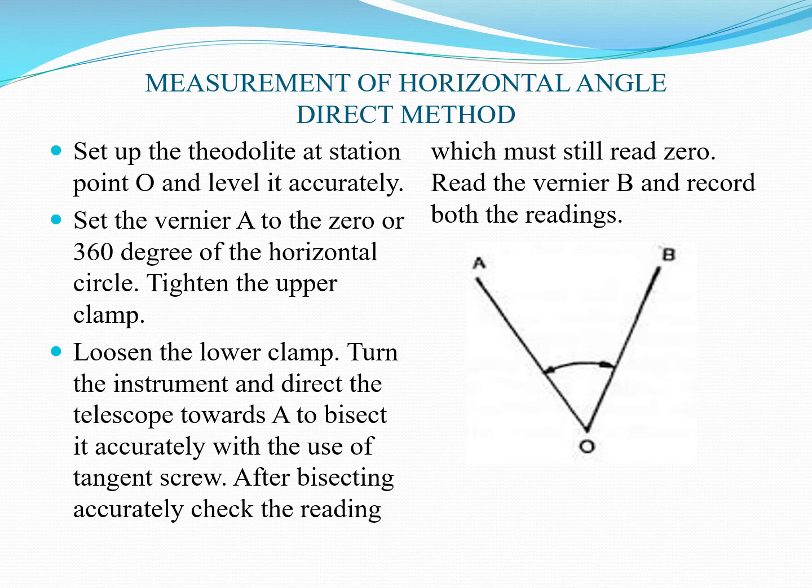First we look at the direct method of horizontal angle measurement. Suppose you have to calculate the horizontal angle AOB — see this figure. Initially, set up the theodolite at station point O and level it accurately. After setting the theodolite over station O, perform the temporary adjustments: centering and leveling the instrument.